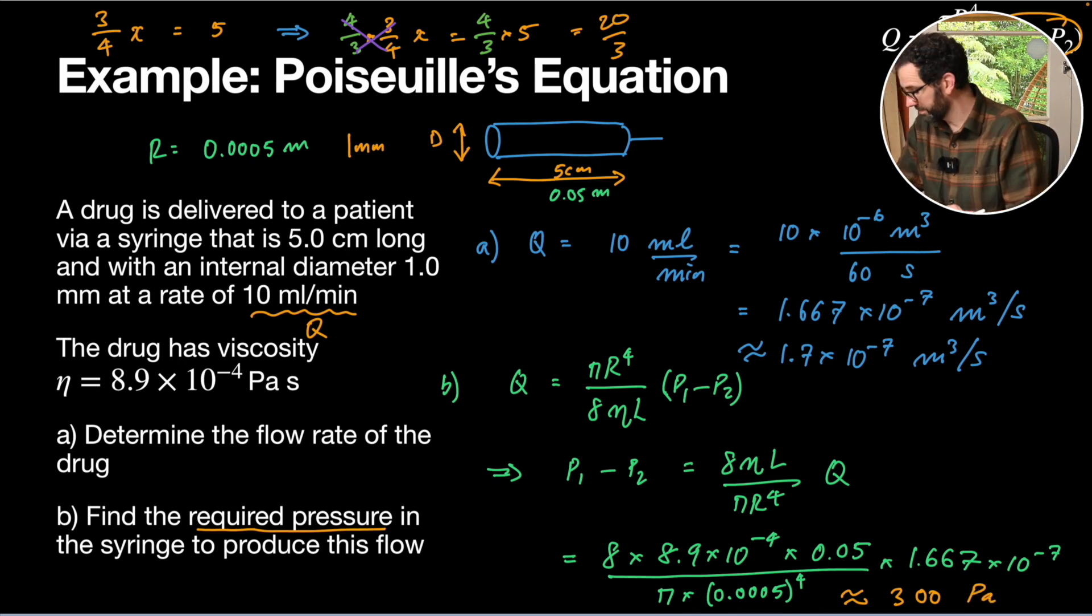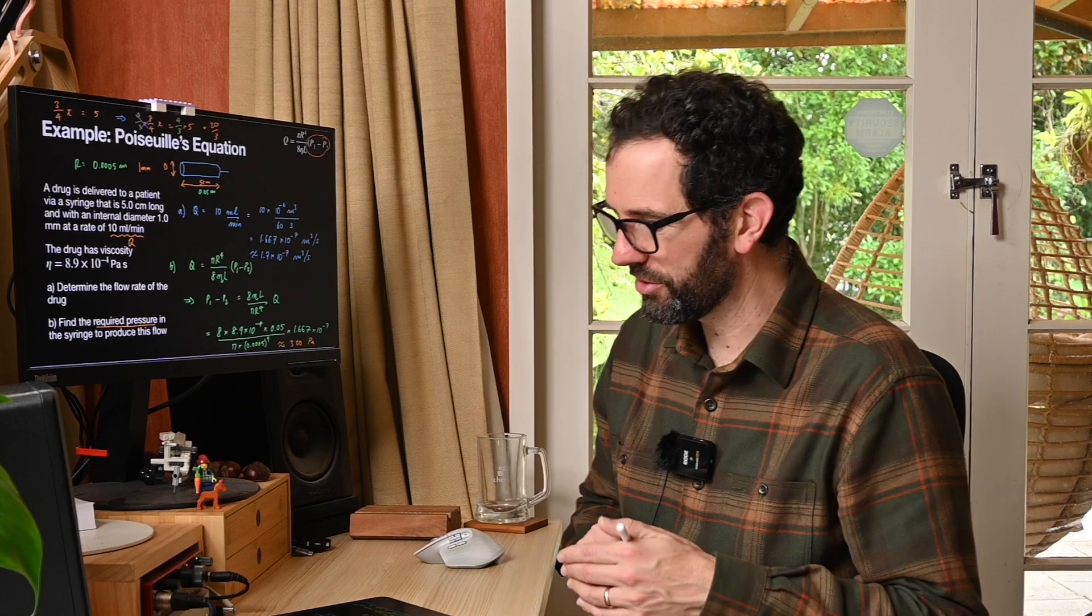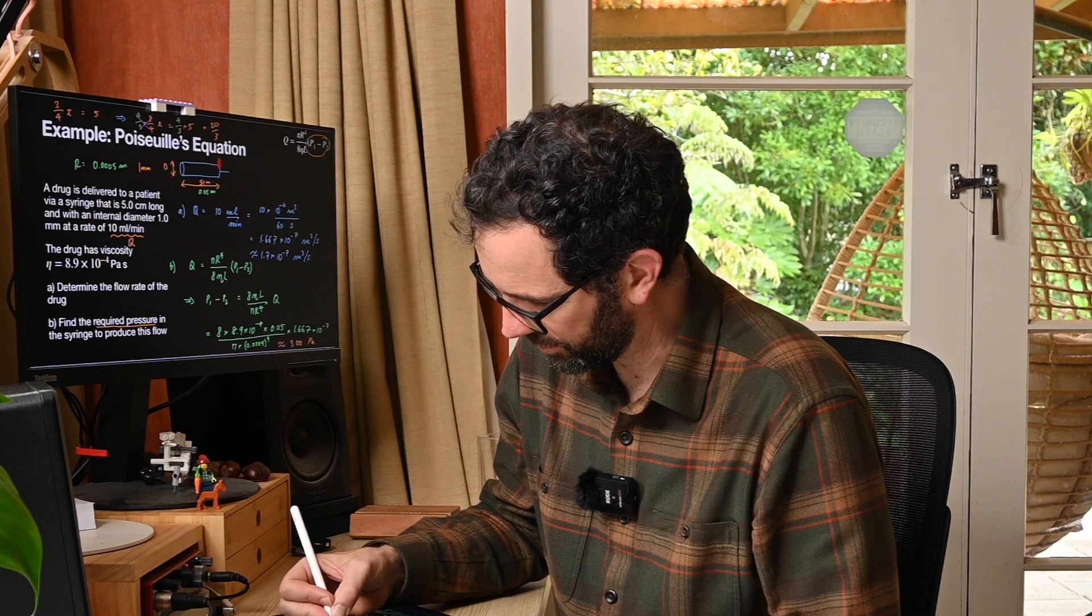That's right. So pressure required to push that much fluid through our liquid, liquid through our syringe, is going to be 300 pascals between the two ends of the cylinder. So that means the difference in pressure between this point here and this point here would be 300 pascals.